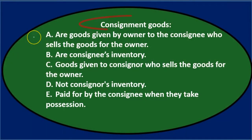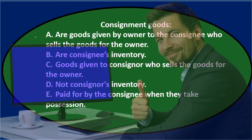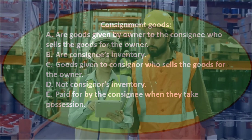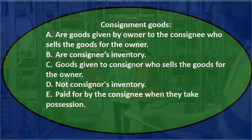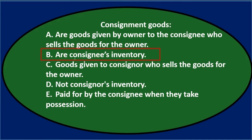Note that those paintings are still the painter's — they're the inventory of the painter, even though the restaurant has possession of them. So, option A says consignment goods are goods given by owner to the consignee who sells the goods for the owner, which sounds correct. Option B says they are the consignee's inventory. There are terms like consignee and consignor — the consignee is the person receiving the inventory, in our case the restaurant. They have it physically, but it's not really theirs — it's the consignor's inventory. So it's not B.